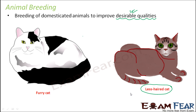How do we get that desirable quality? Human beings would want more and more cats to be less-haired. In order to do that, they mate appropriate animals — they select animals which have less fur on their body and mate them with other animals. The offspring formed will have less hair over their body, and that is how the number of less-haired cats will gradually keep increasing.